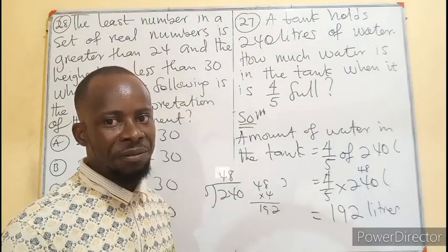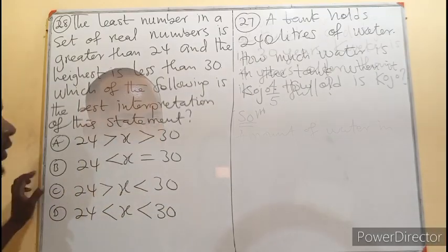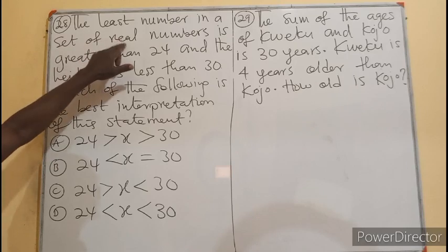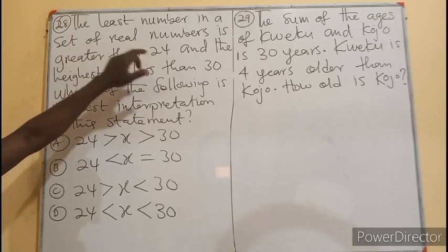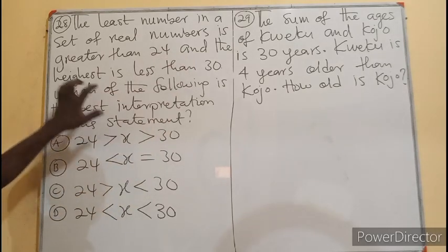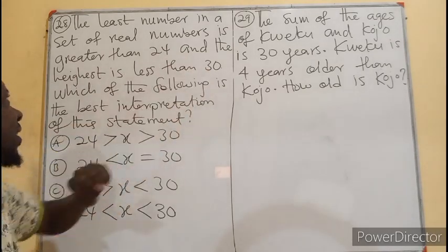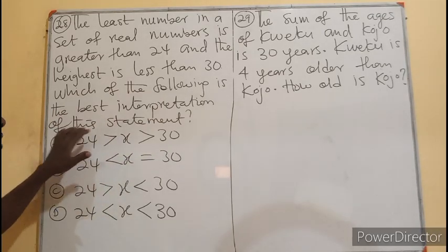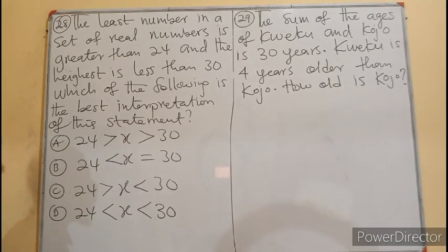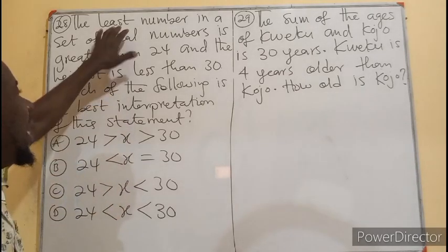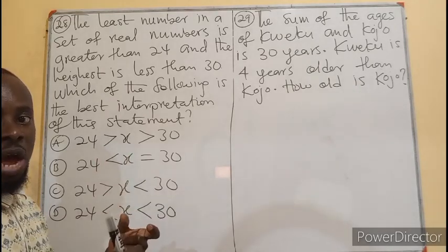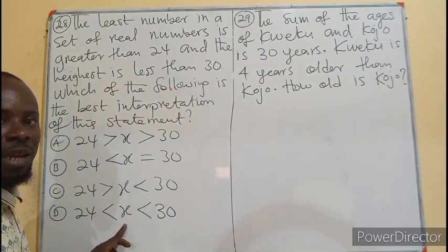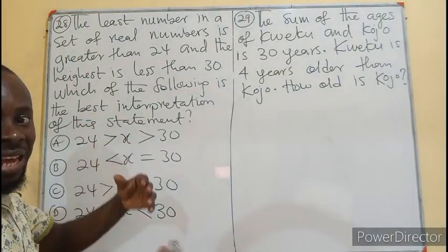Question 28: The least number in a set of real numbers is greater than 24 and the highest is less than 30. Which of the following is the best interpretation of this statement? The least meaning the smallest—we are not aware of the numbers, so we are going to use x.